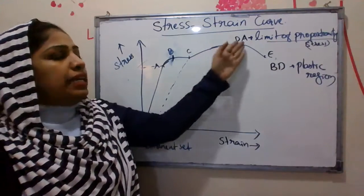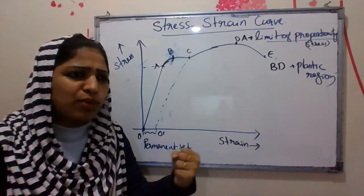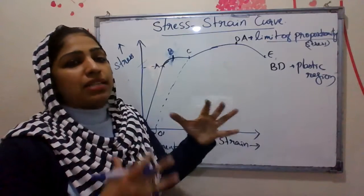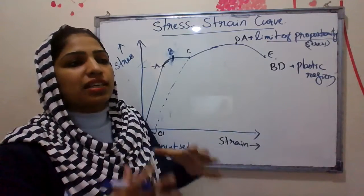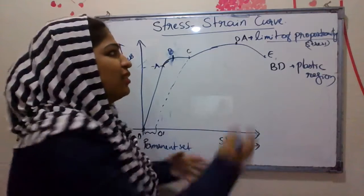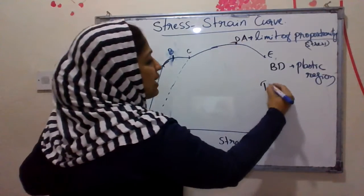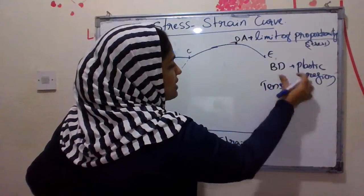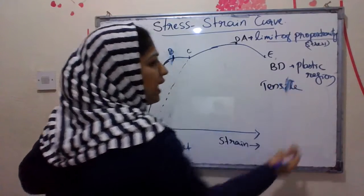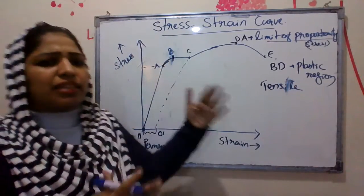Point D represents the maximum stress that can be applied to the material. This is called the Ultimate Tensile Strength or Ultimate Stress — it is the maximum stress the material can withstand.